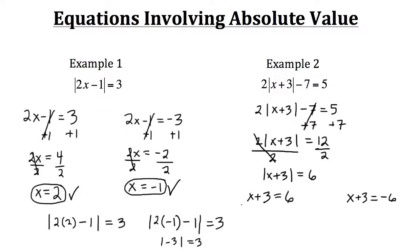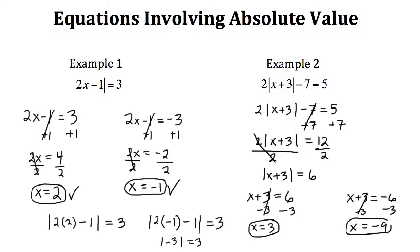So x plus 3 could equal positive 6 or x plus 3 could equal negative 6. For the first case, we subtract 3 from both sides and get x equals 3. For the second case, we again subtract 3 from both sides, and negative 6 minus 3 gives us x equals negative 9. Those are our two solutions for this equation. We'll skip the verification and move on to a new example.